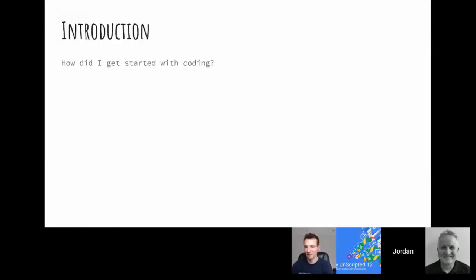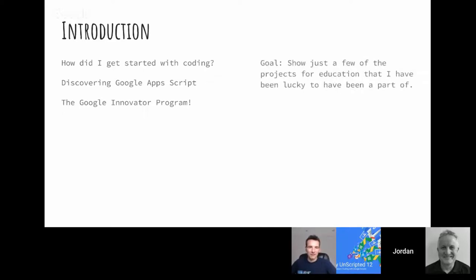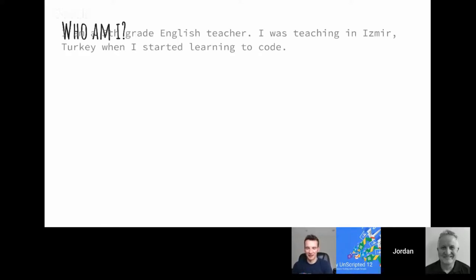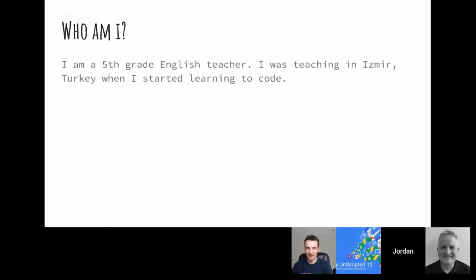So how did I get started with coding? I'm going to talk about how I got started with coding, discovering Google Apps Script, and then the Google Innovator program. My goal for this talk is to show just a few of the projects for education that I've been lucky to have been a part of. A lot of this has been the networking aspect — connecting with people who have great ideas. I'm a pretty good teacher, but I just happen to have learned enough JavaScript to put other great teachers' ideas into cool proofs of concept. I'm Jordan Ray, an English teacher, teaching for eight years, now in Beijing.